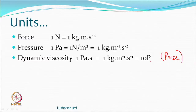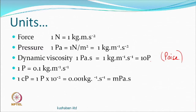Ten poise equals one Pascal-second, so one poise is 0.1 kg/(m·s). One centipoise is 10⁻² poise, which equals 0.001 kg/(m·s), or equivalently one millipascal-second.